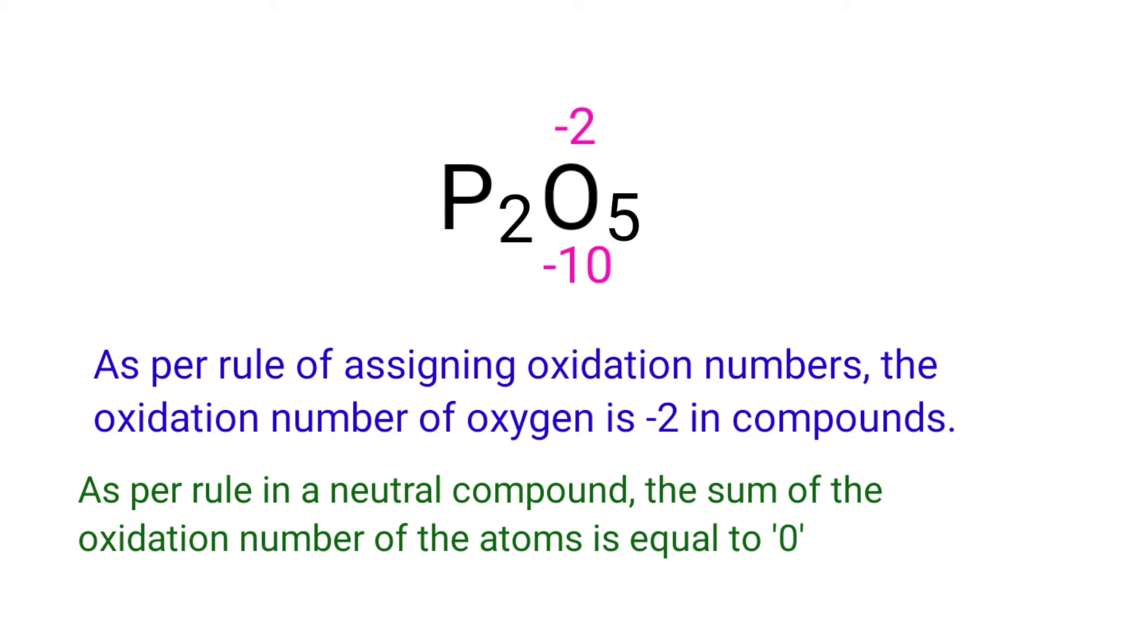As per rule in a neutral compound, the sum of the oxidation number of the atoms is equal to 0. So the numbers along the bottom must add up to 0. So the number under P2 must be plus 10.